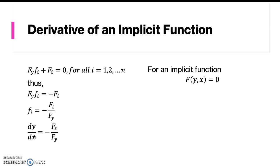So in general, for an implicit function F, where the function consists of y and x, we get dy per dx is just equal to minus Fx per Fy.